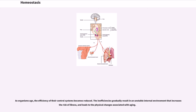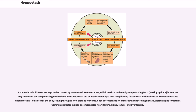As organisms age, the efficiency of their control systems becomes reduced. The inefficiencies gradually result in an unstable internal environment that increases the risk of illness and leads to the physical changes associated with aging. Various chronic diseases are kept under control by homeostatic compensation, which masks a problem by compensating for it in another way. However, the compensating mechanisms eventually wear out or are disrupted by a new complicating factor, such as the advent of a concurrent acute viral infection, which sends the body reeling through a new cascade of events. Such decompensation unmasks the underlying disease, worsening its symptoms. Common examples include decompensated heart failure, kidney failure, and liver failure.